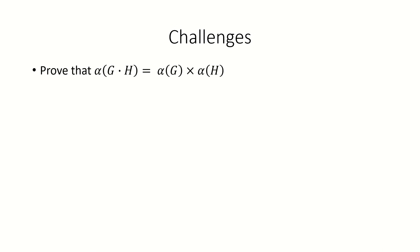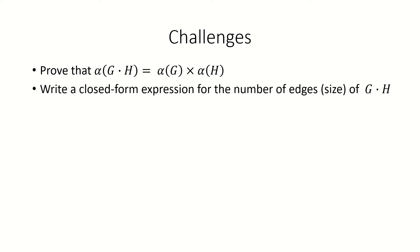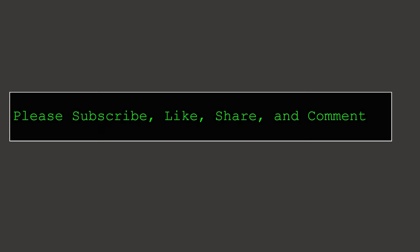I'd like to leave you with two exercises. Can you, using a similar argument to the one we just used to prove our clique number identity, prove that the independence number — the size of the largest independent set of the lexicographic product of G and H — is the product of the independence numbers of G and H? Also, can you write a closed-form expression for the number of edges in the lexicographic product of G and H, using the number of vertices and edges in G and H? Let me know how it goes in the comments. Thanks for watching. Please subscribe, like, share, and comment if you like the video. Have a great day.